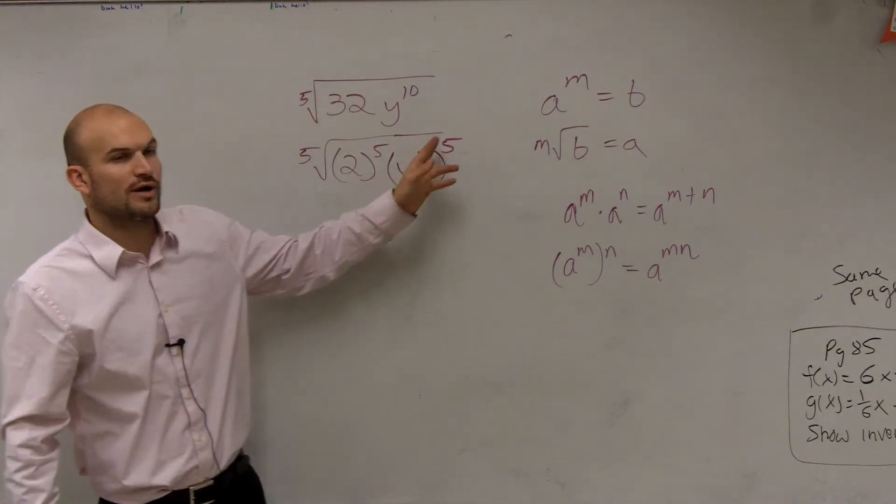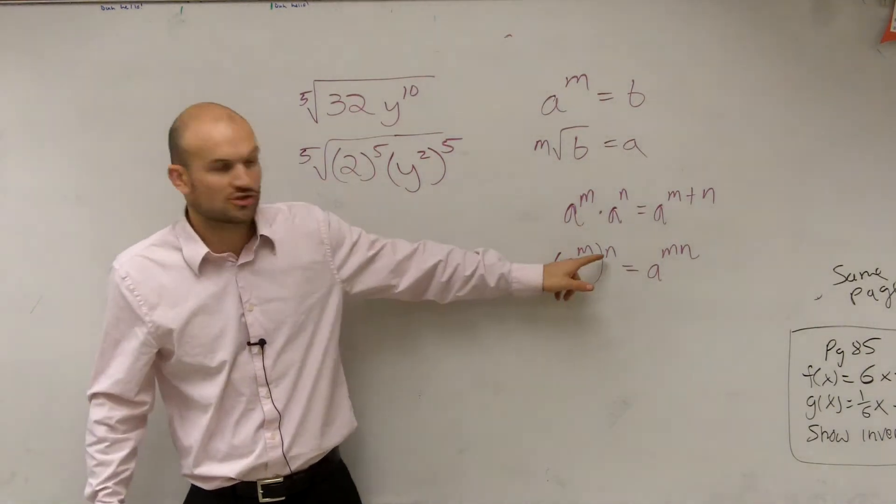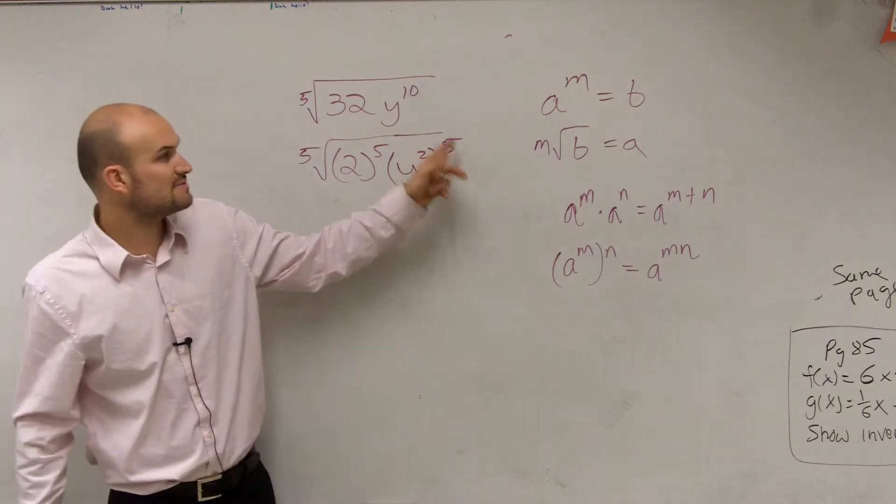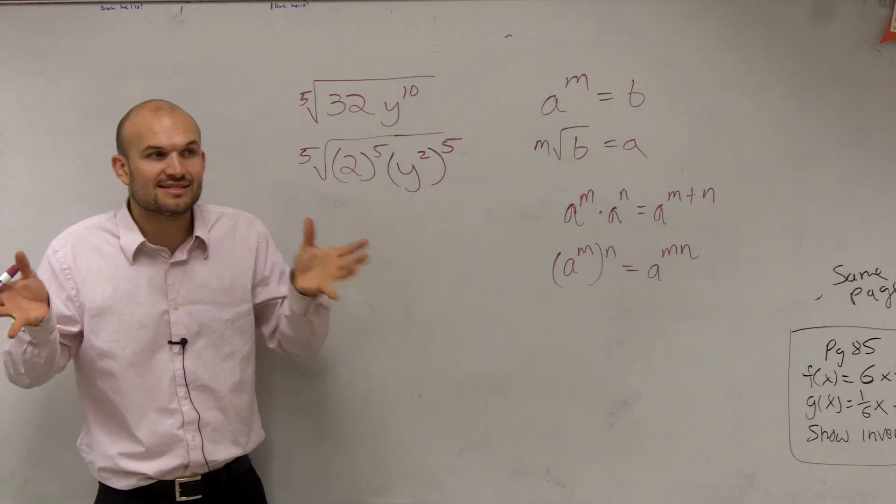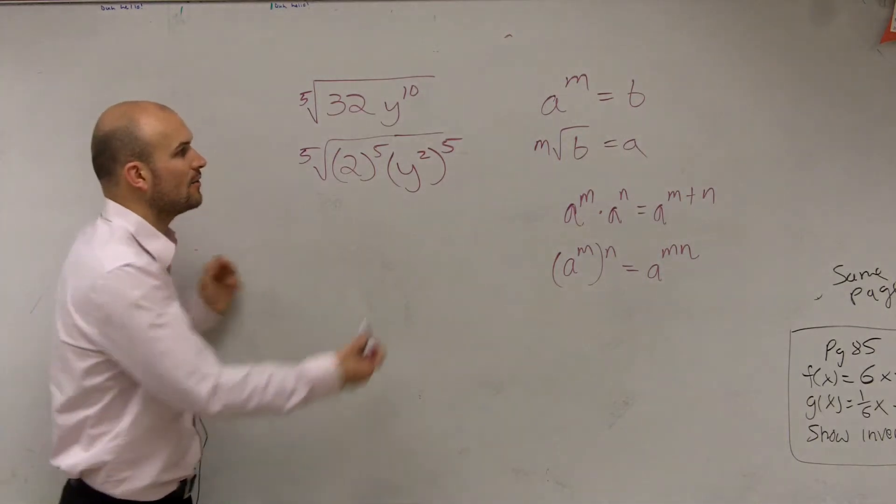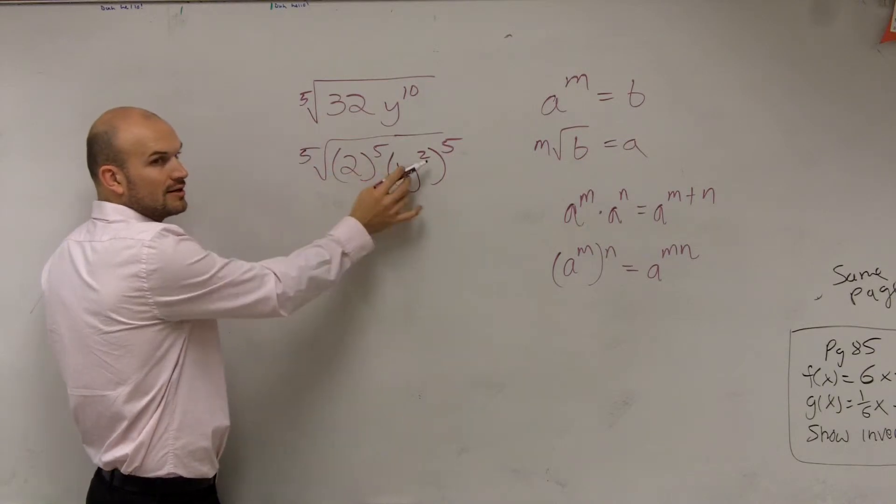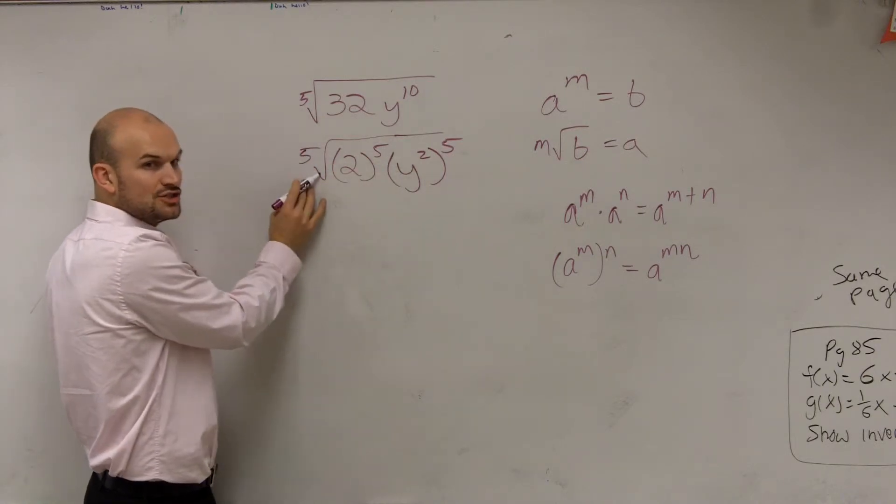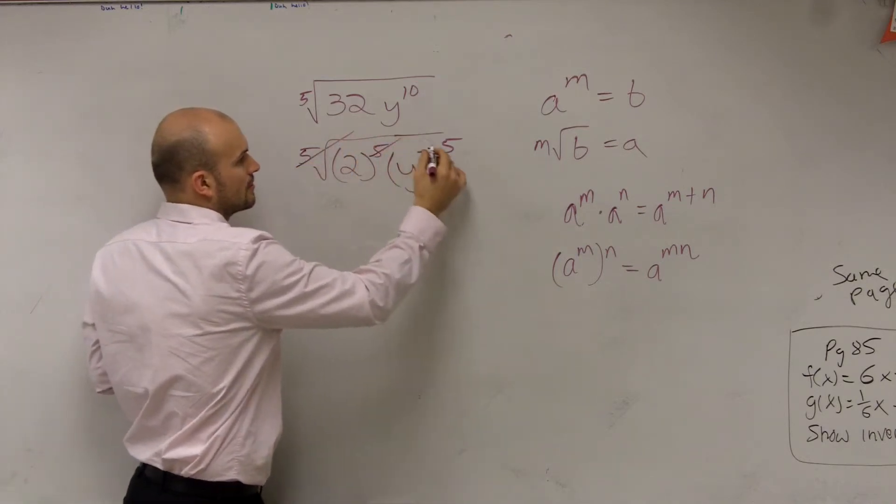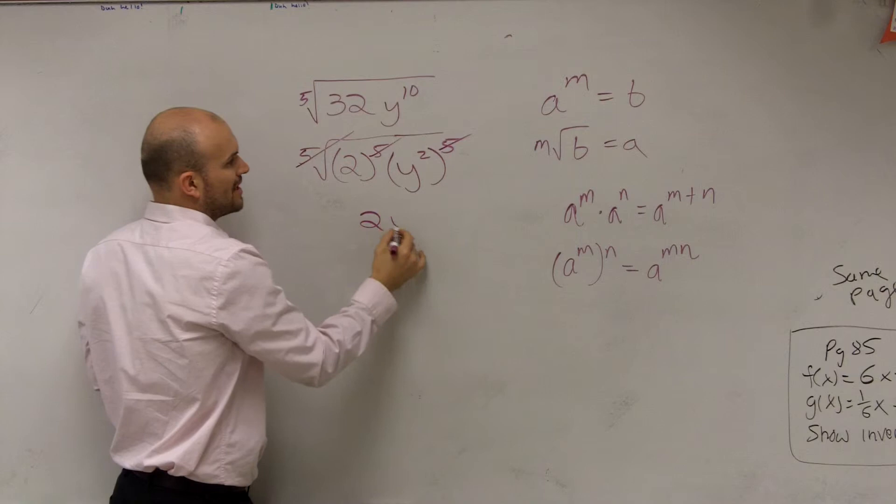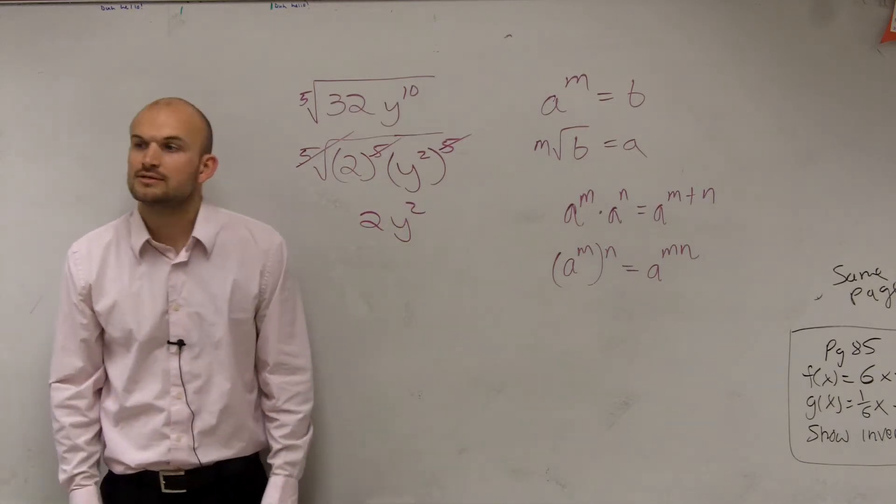If I wrote y squared raised to the fifth power, by applying this rule, I multiply my exponents. Is 2 times 5 going to give me 10? Yes. Does everybody see how I did that? Now, the reason why I did that is so important, because now I've taken each one of these values and I've raised them to the fifth power, which now I can undo them with my fifth root. So therefore, I'm left with 2y squared. It's going to be my final answer.